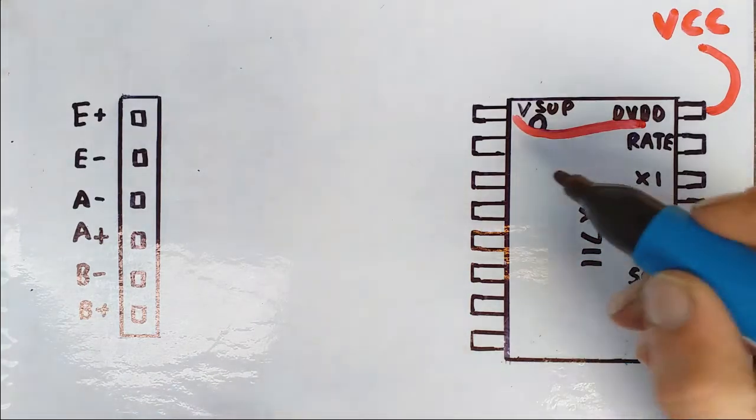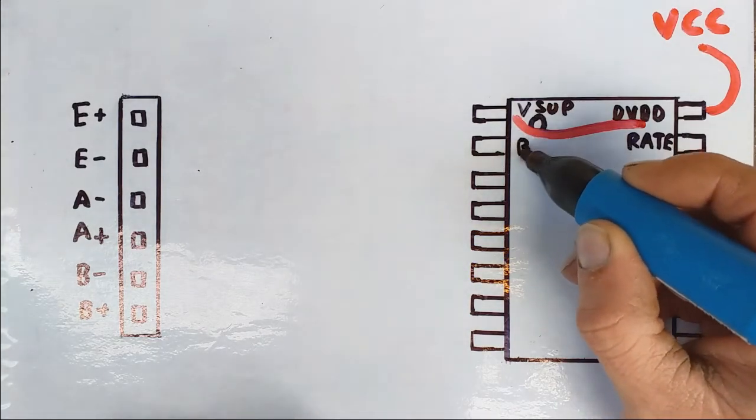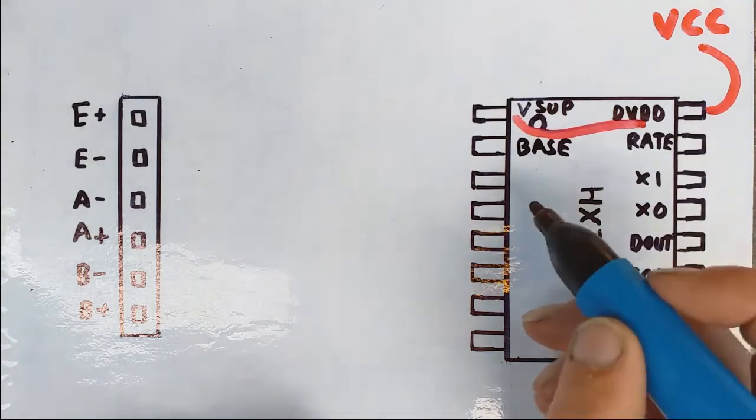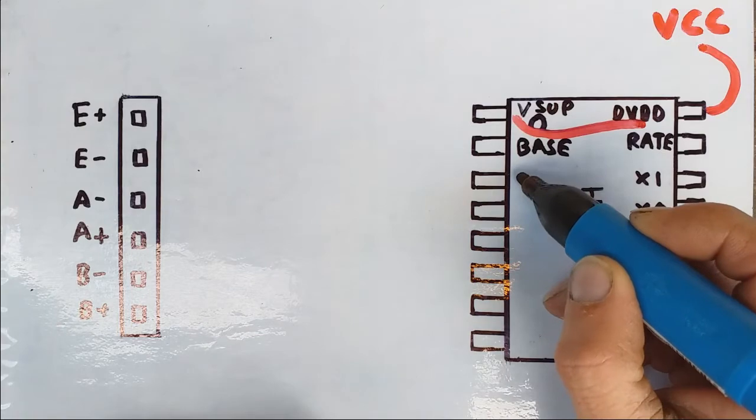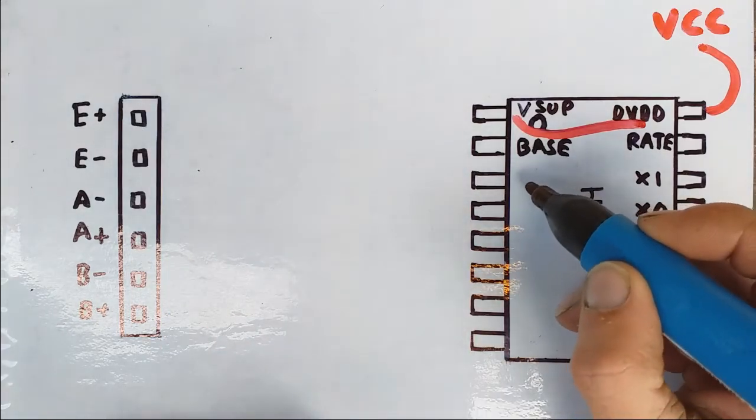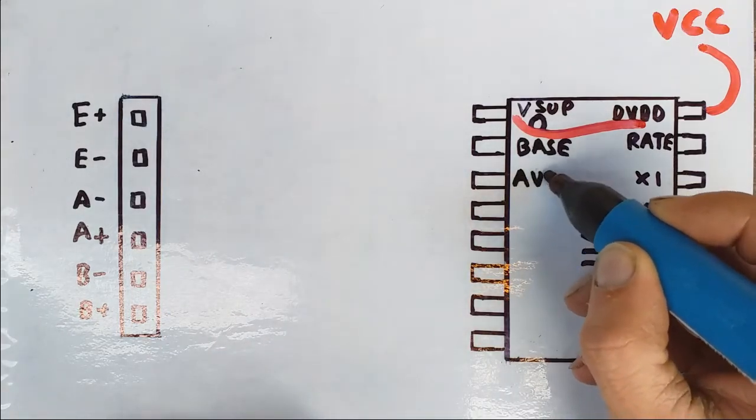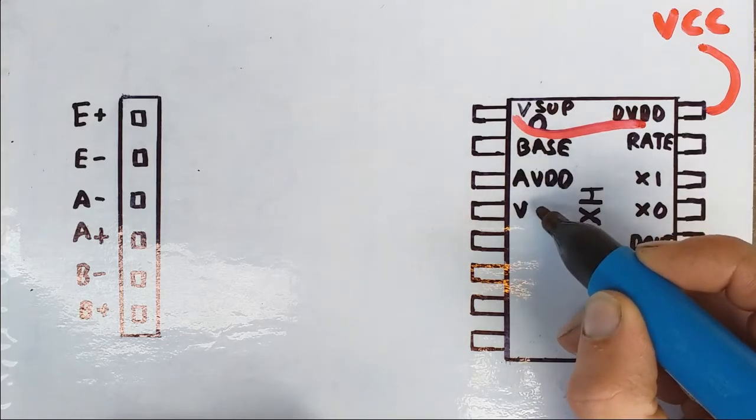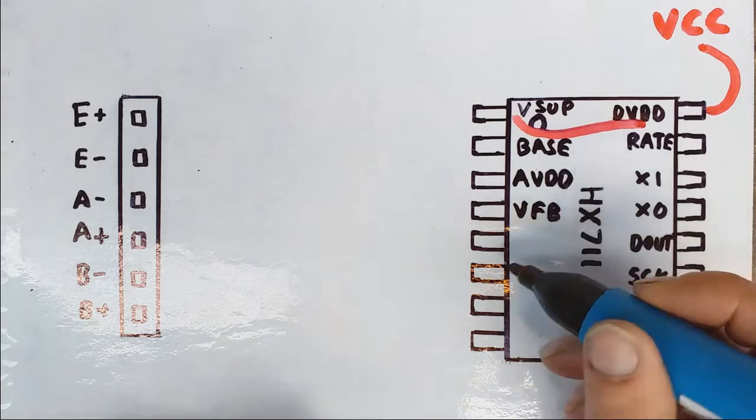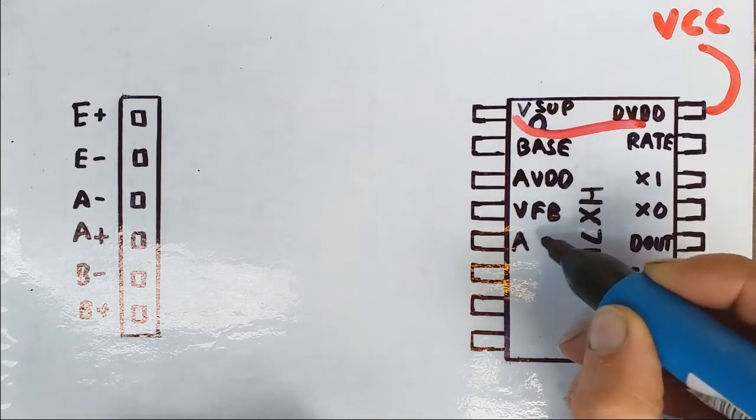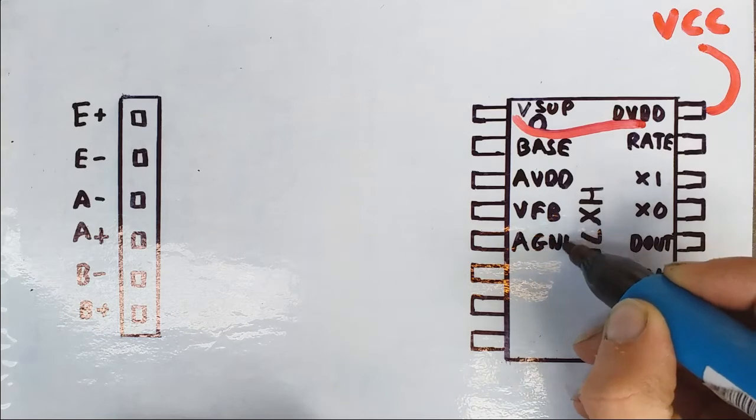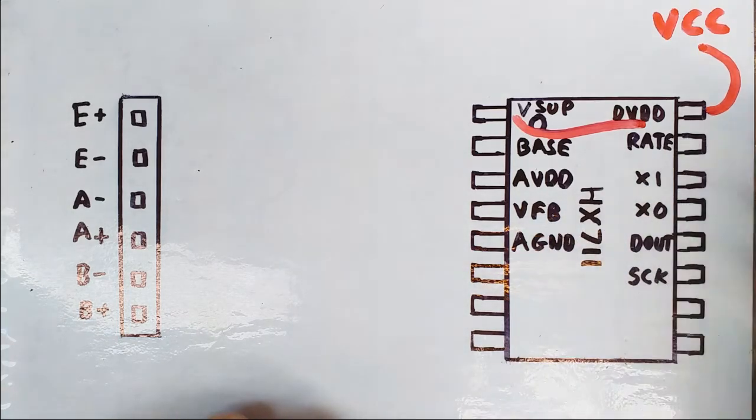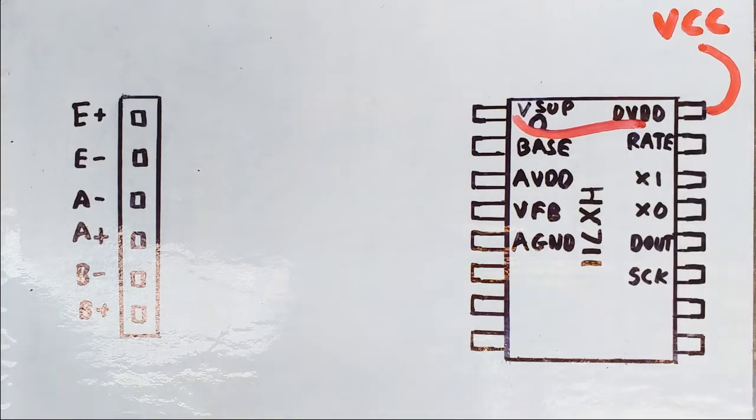Second pin is called base because that goes to the base of the transistor. The third is the analogue voltage, excitation voltage which is called AVDD. The fourth pin is voltage feedback, fifth which we've looked at in a previous video is the analogue ground. Now it's important to make sure that analogue ground is connected to your ground coming in from the microcontroller.